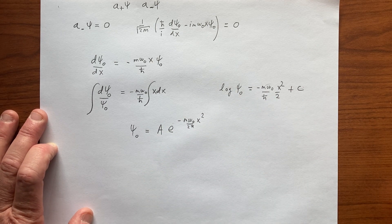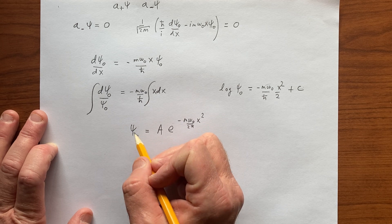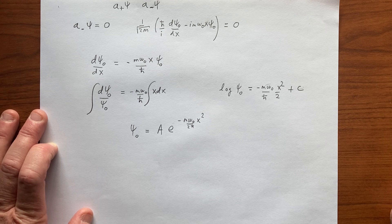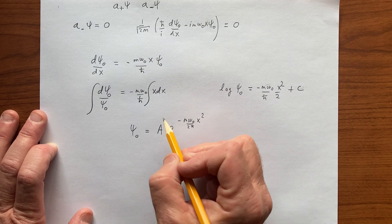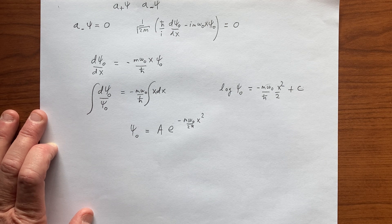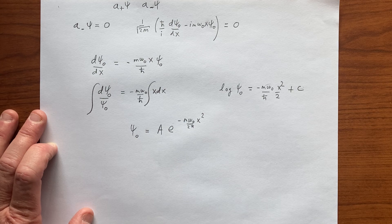And of course A is the normalization factor, which we could get by doing |ψ₀|² integrated from minus to plus infinity, that has to be equal to one. But we have the general form of the ground state, and so we can use this to figure out what the ground state energy is, and we'll do that next.